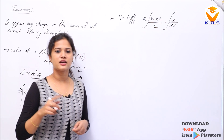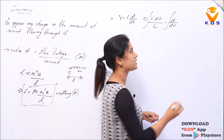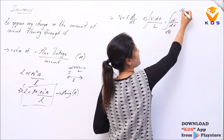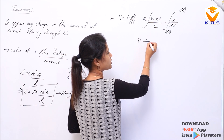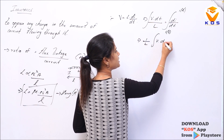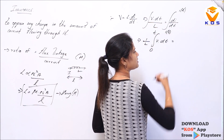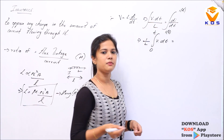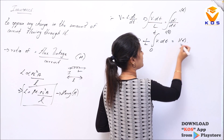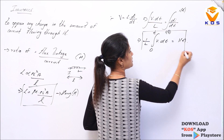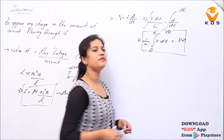If we integrate the current through the inductor, ranging from initial condition I(0), then 1 over L times the integral of V dt, with time ranging from 0 to T, equals I(T) minus I(0). Assuming initial condition I(0) equals zero, I(T) equals 1 over L times the integral of V dt.